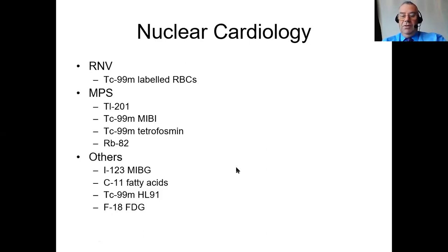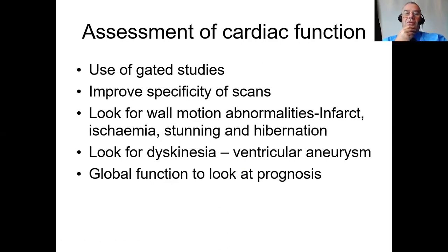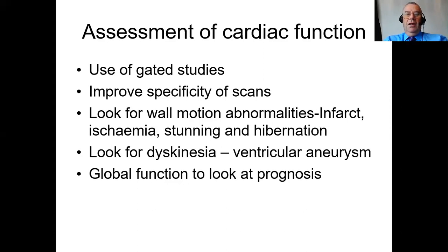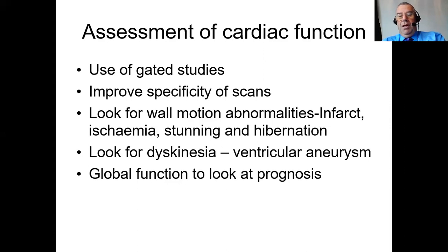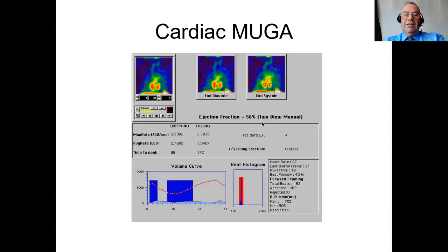We're going to start off with just a few slides on multiple gated acquisition or MUGA scans. They're much less common now that we have widespread use of echocardiography, but they are useful in terms of looking for global ejection fraction in a consistent way. They tend to be used primarily in oncology. You can pick up dyskinesia, ventricular aneurysms, and look at global function. With gated myocardial perfusion studies such as gated MIBI or gated PET, we combine everything into a gated MPS so we can get perfusion and function.